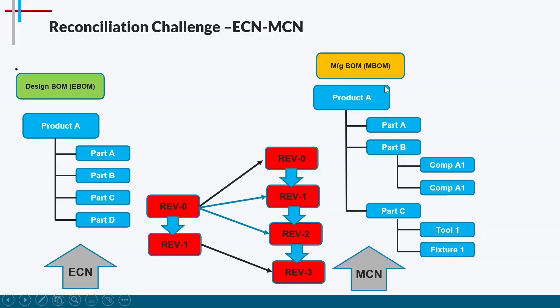We must have complete knowledge of which eBOM revision derives which mBOM revision. When making ECN or MCN changes, we need to consider three things: existing stock, lead time, and orders in progress. The best practice to eliminate these challenges is eBOM and mBOM synchronization — we need to synchronize them so there is proper communication and the latest data is always consumed in the mBOM.